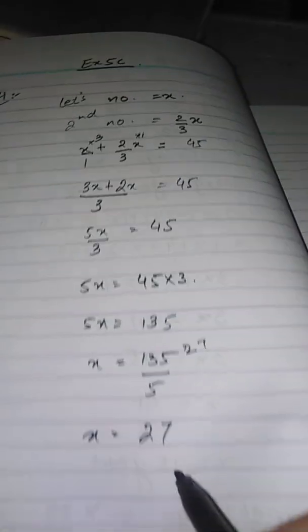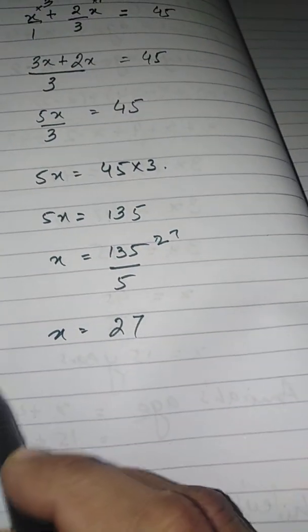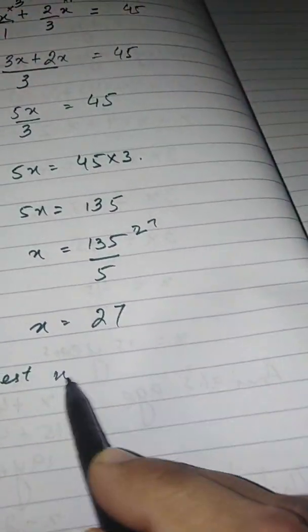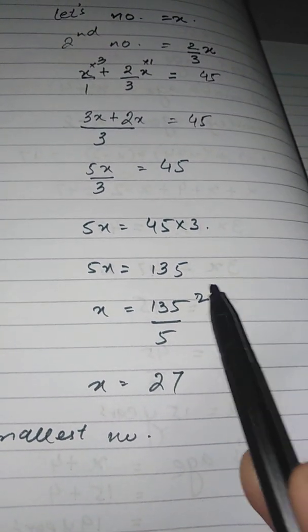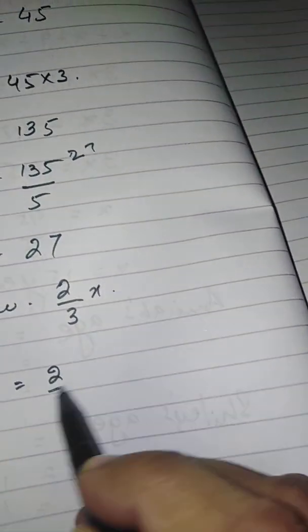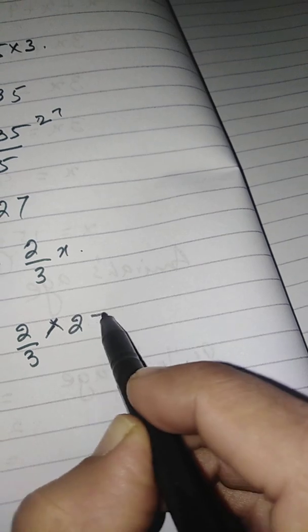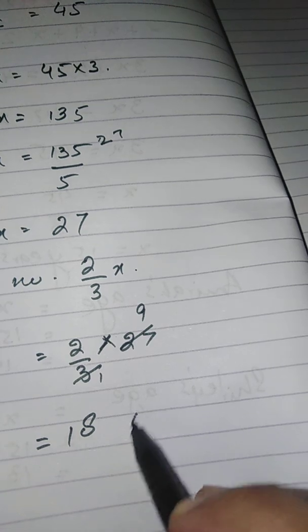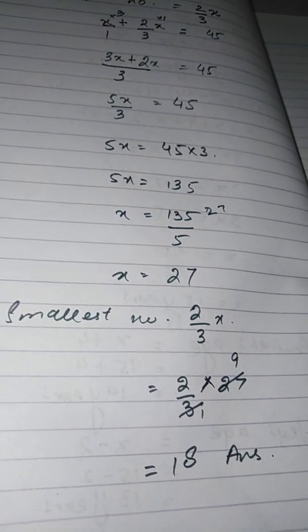X equals 27. They said find the smallest number, which is the fractional one: two-thirds X. Putting the value of X as 27, we get two-thirds of 27. Three nines are 27 and two nines are 18. So the smaller number is 18.